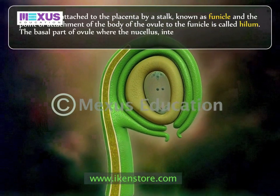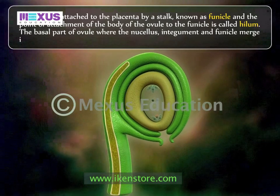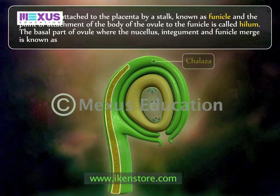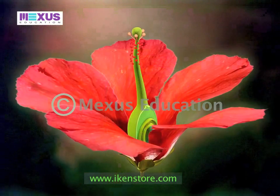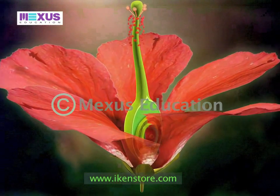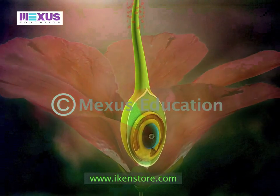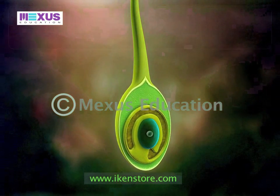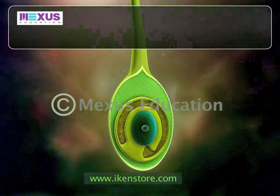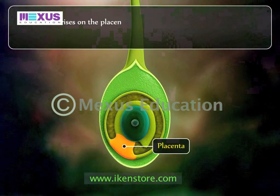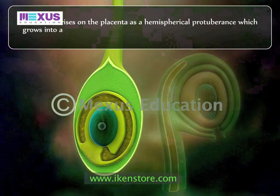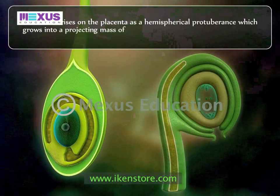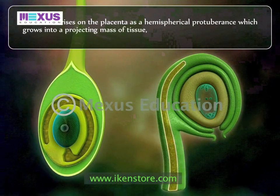The point of attachment of the body of the ovule to the funicle is called the hilum. The basal part of the ovule where the nucellus, integument, and funicle merge is known as the chalaza.